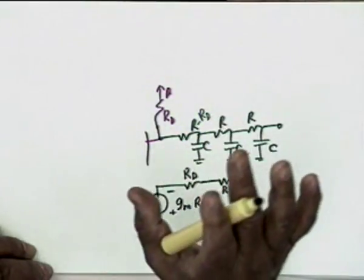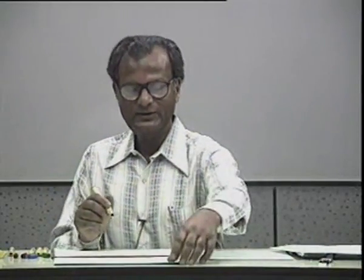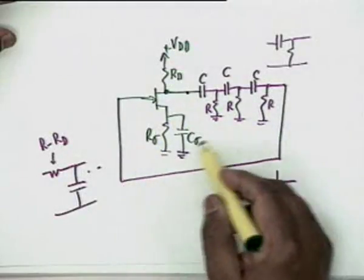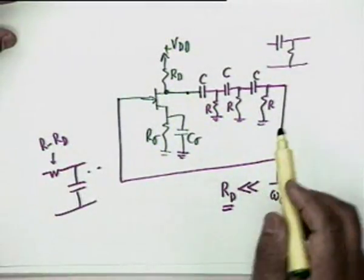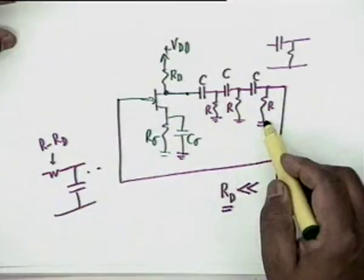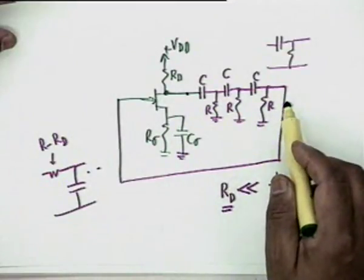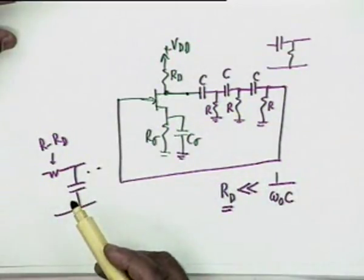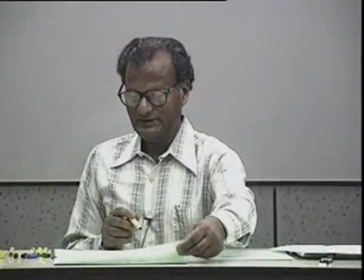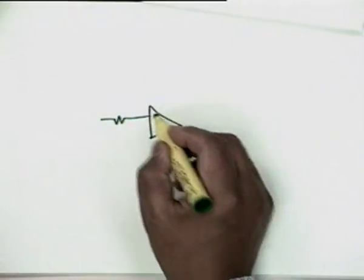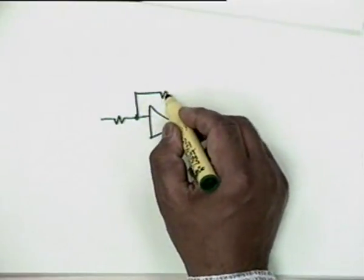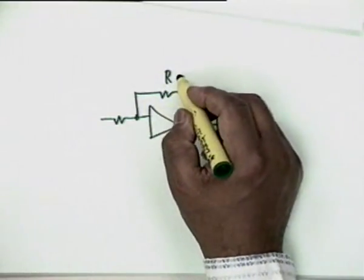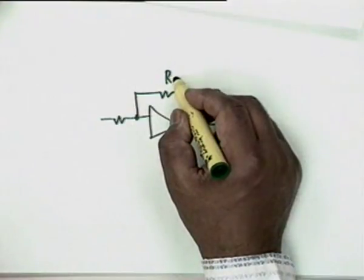In an FET common-source amplifier, the last R is not disturbed — it is not shunted by anything. On the other hand, if you use an inverting op-amp configuration with R₂ and R₁, and connect the CR network, then R₁ will come in parallel with the last R of the network, changing the frequency of oscillation and the oscillation condition.